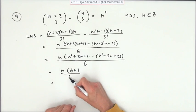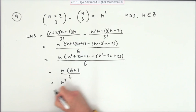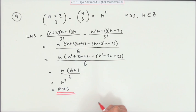So you're just left with the 6s cancel, you're just left with n squared. And that's the right-hand side. So job done. Which in Latin, of course is QED. Not many people know that.